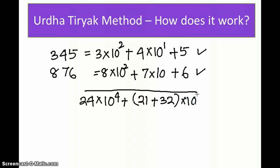That's 53 times 10 to the power 3, plus to get the coefficient of 10², it is 3 times 6 (18), plus 5 times 8 (40), plus 4 times 7 (28).